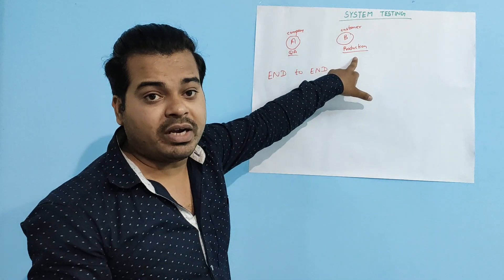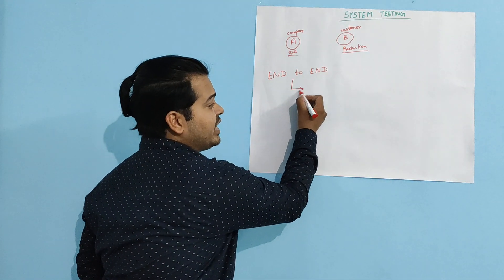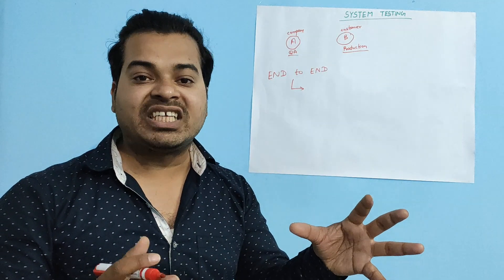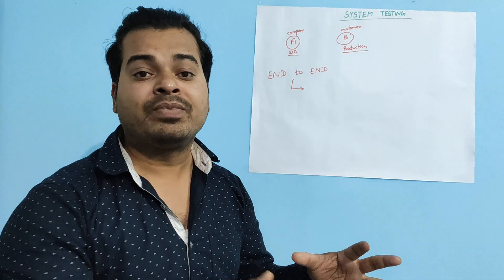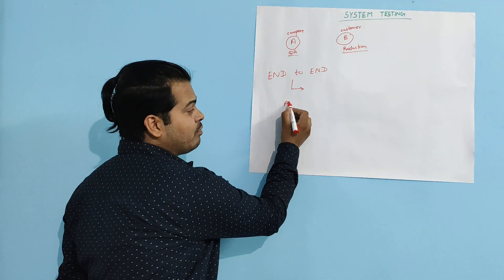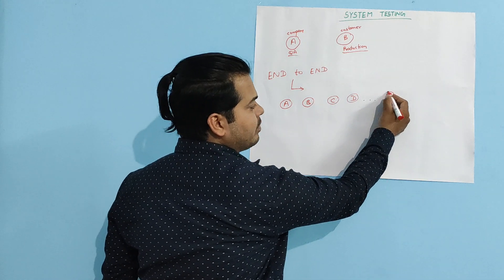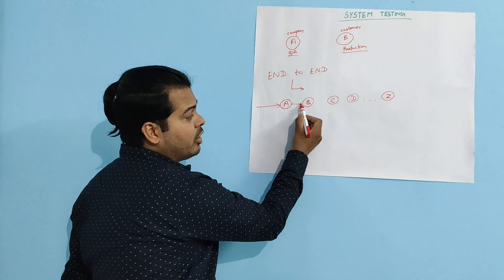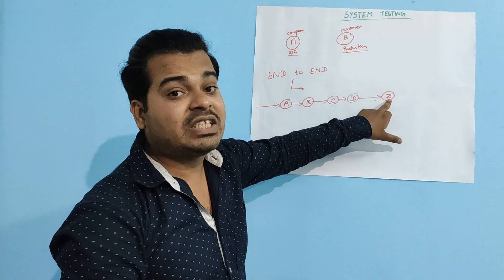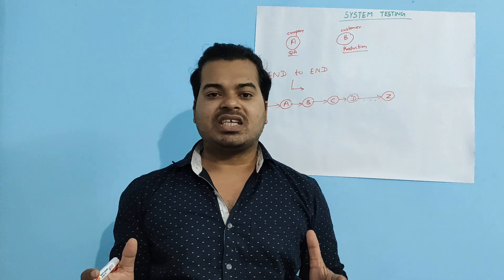Now, what is end-to-end testing? End-to-end testing means navigating through all the features and testing whether the end feature is working correctly. For example, if you have Module A, B, C, D, and Z, you navigate through all those modules and test whether the last module is working perfectly. That is called end-to-end testing.